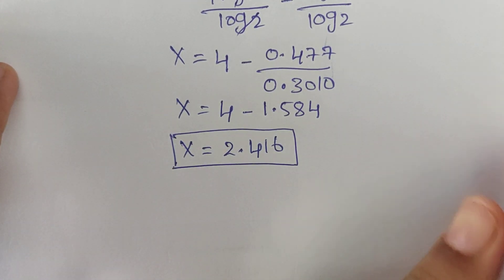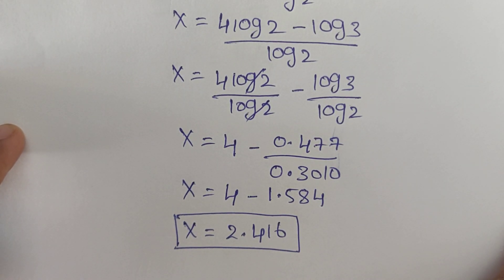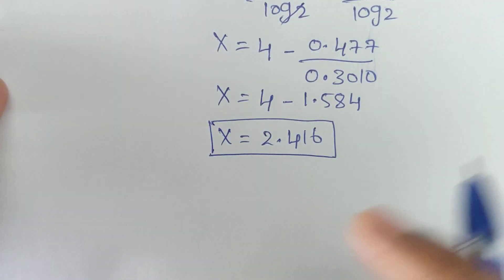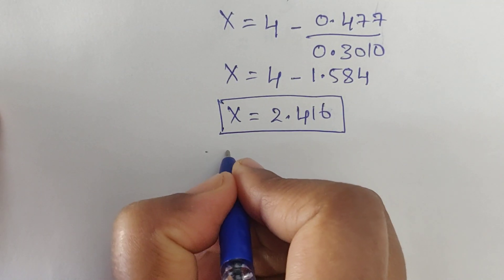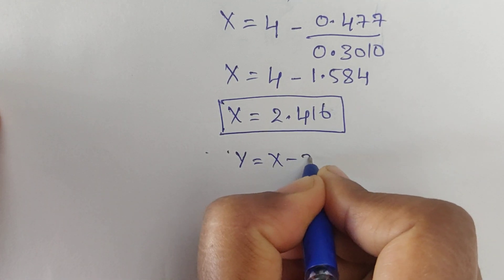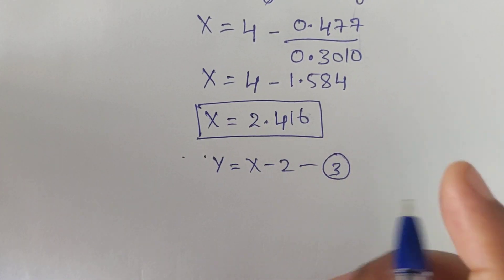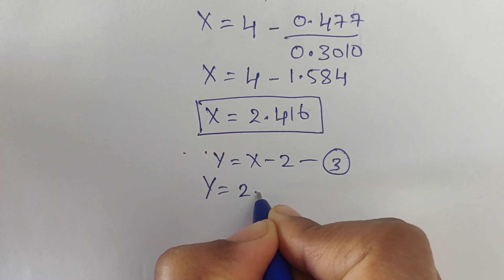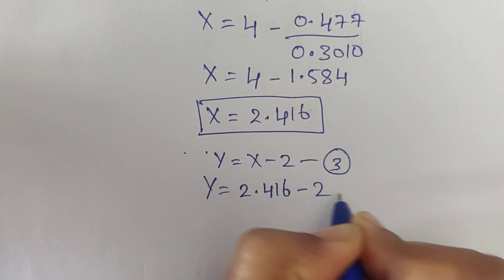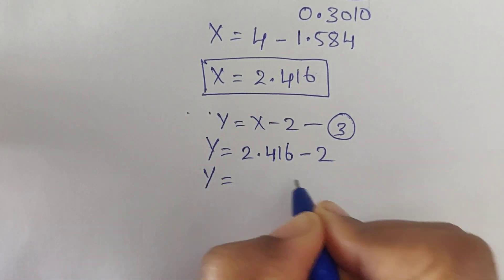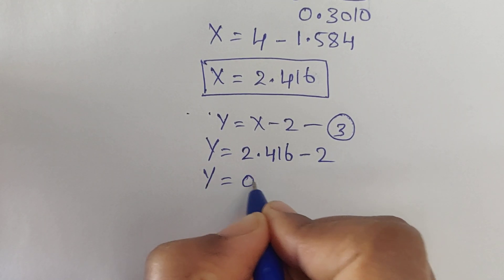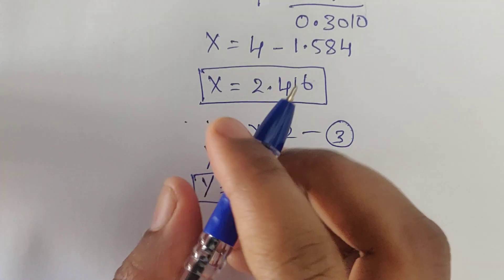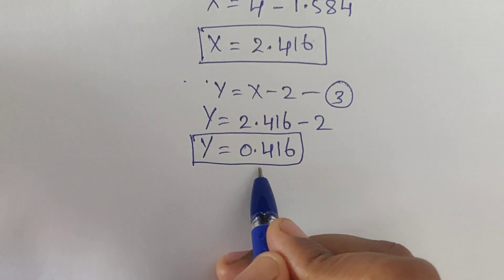So we got the x value. Now we need to find the value of y. Just take equation 3: y equals x minus 2. Substitute the value of x: y equals 2.416 minus 2, which equals 0.416. So we got x equals 2.416 and y equals 0.416.